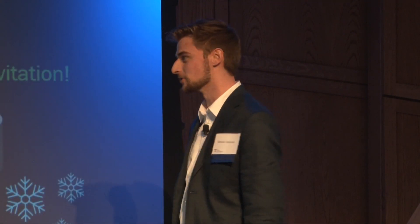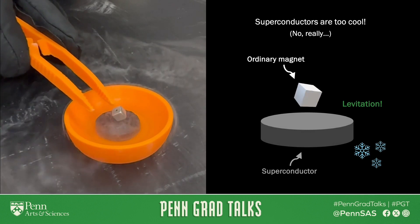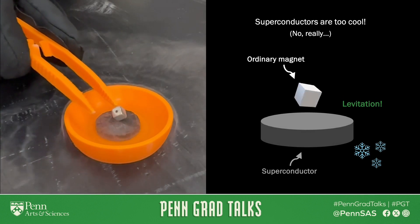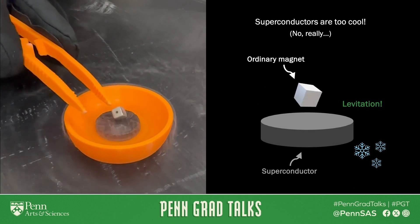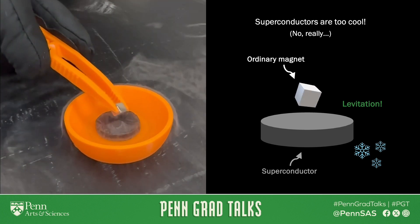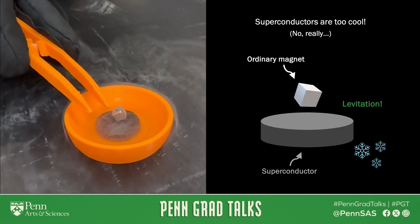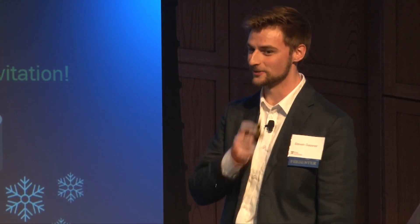What I'm playing with on the left here is called a superconductor. You know you have a superconductor if you take an ordinary magnet and it appears to levitate above the material. It's really one of the coolest things. And unfortunately, I mean that literally, because every material we know that can do this, we have to get down to very, very cold temperatures. Over here, I had to use liquid nitrogen.